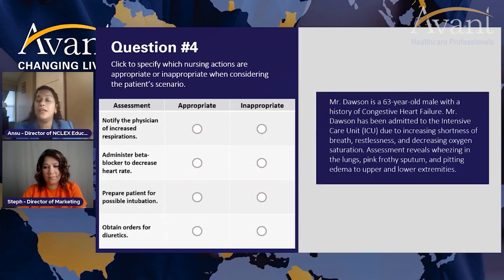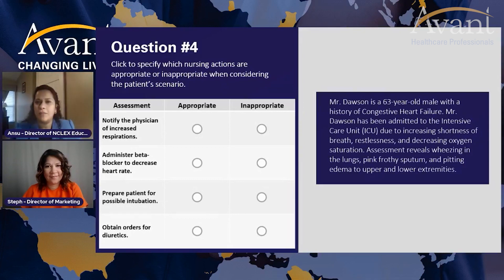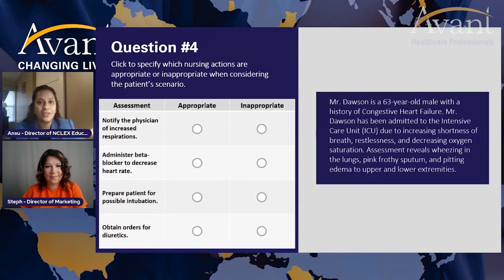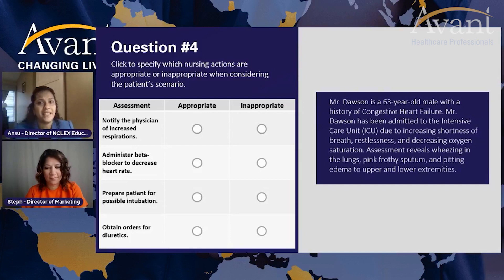I'm going to read through each action — you tell me if it is appropriate or inappropriate. Action one: notify the physician of this increased respiration. Now, in NCLEX, based on strategy, notifying the provider is one of your last options, because NCLEX is testing what you know as a nurse. If there's something a nurse can do, that's your right answer. Contacting the provider comes when the patient is so critical you need help. So do you think his respiratory acidosis, frothy sputum, rising respirations, and dropping saturations mean you need to call the doctor now? Appropriate or inappropriate?